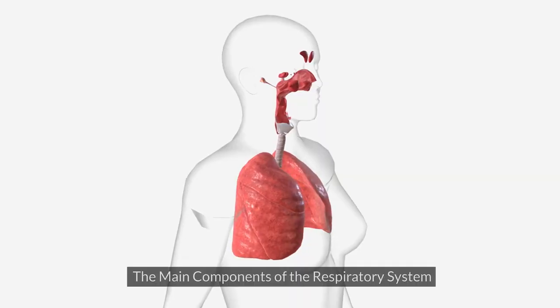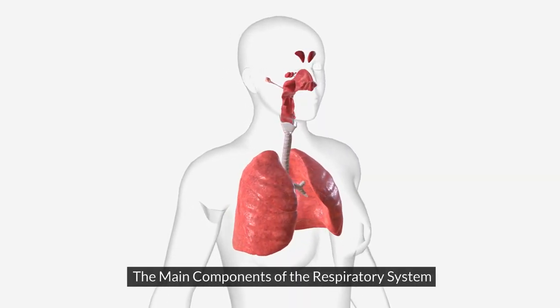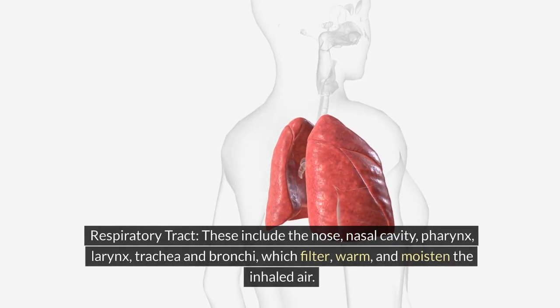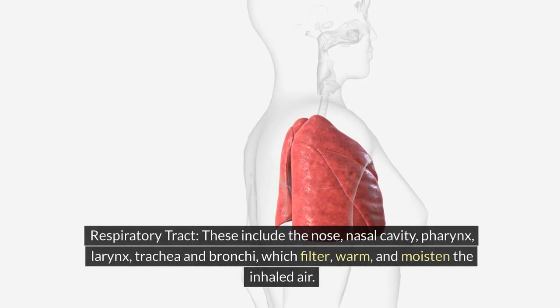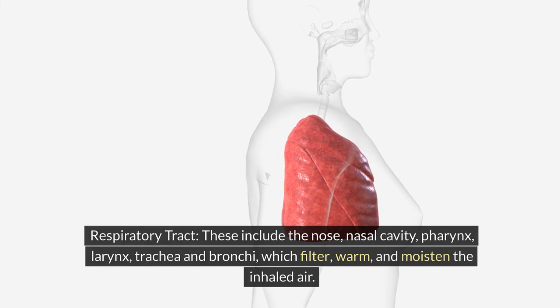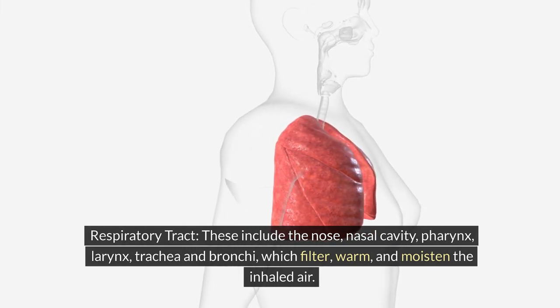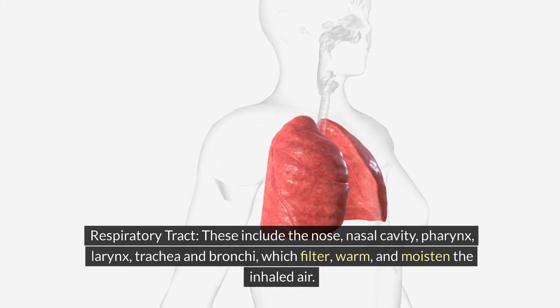The main components of the respiratory system. 1. Respiratory tract. These include the nose, nasal cavity, pharynx, larynx, trachea, and bronchi, which filter, warm, and moisten the inhaled air.